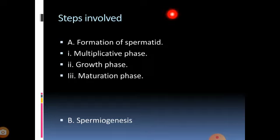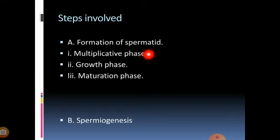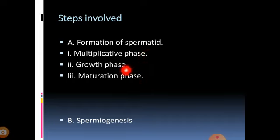What are all the steps involved? There are two major steps. One is formation of spermatid and another one is spermiogenesis. These two are the major steps involved in spermatogenesis. Under formation of spermatid there are three major phases. One is multiplicative phase, which is otherwise called mitotic phase. Second one is growth phase. Third one is maturation phase, which is otherwise called meiotic phase. Multiplicative phase is nothing but mitosis, and maturation phase is nothing but meiosis or reduction division.